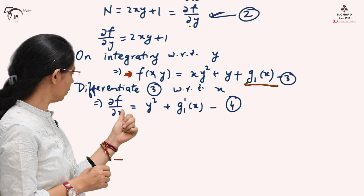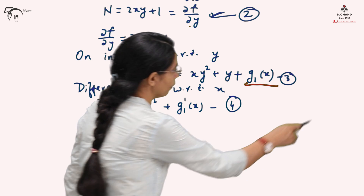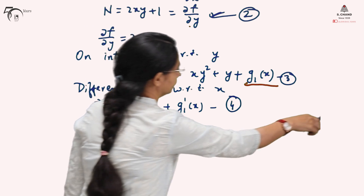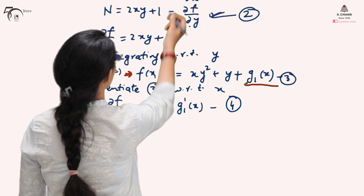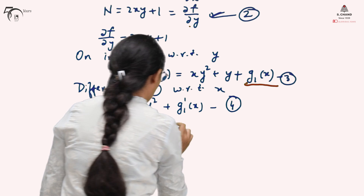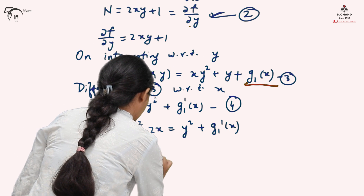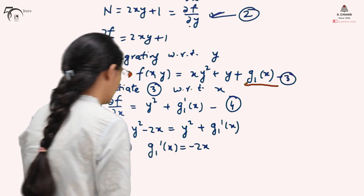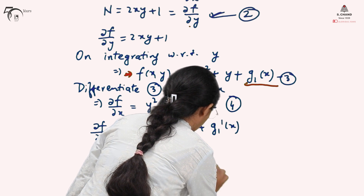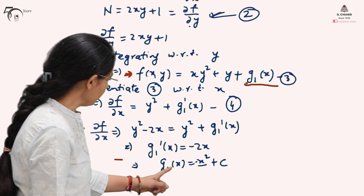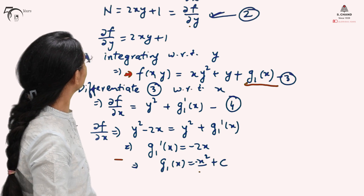Since f(x,y) is the same function, ∂f/∂x must be the same from both expressions. Equating equations (1) and (4): from equation (1), ∂f/∂x = y² − 2x, and from equation (4), ∂f/∂x = y² + g₁'(x). Therefore g₁'(x) = −2x. Integrating with respect to x gives g₁(x) = −x². This shows why taking a plain constant would have caused us to miss this −x² term.